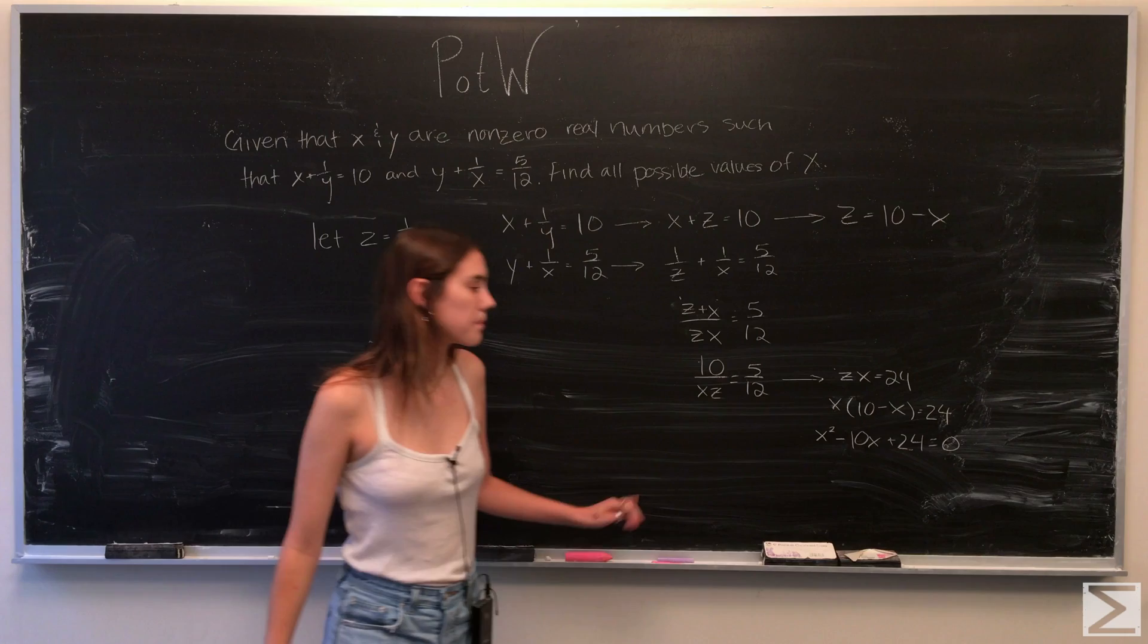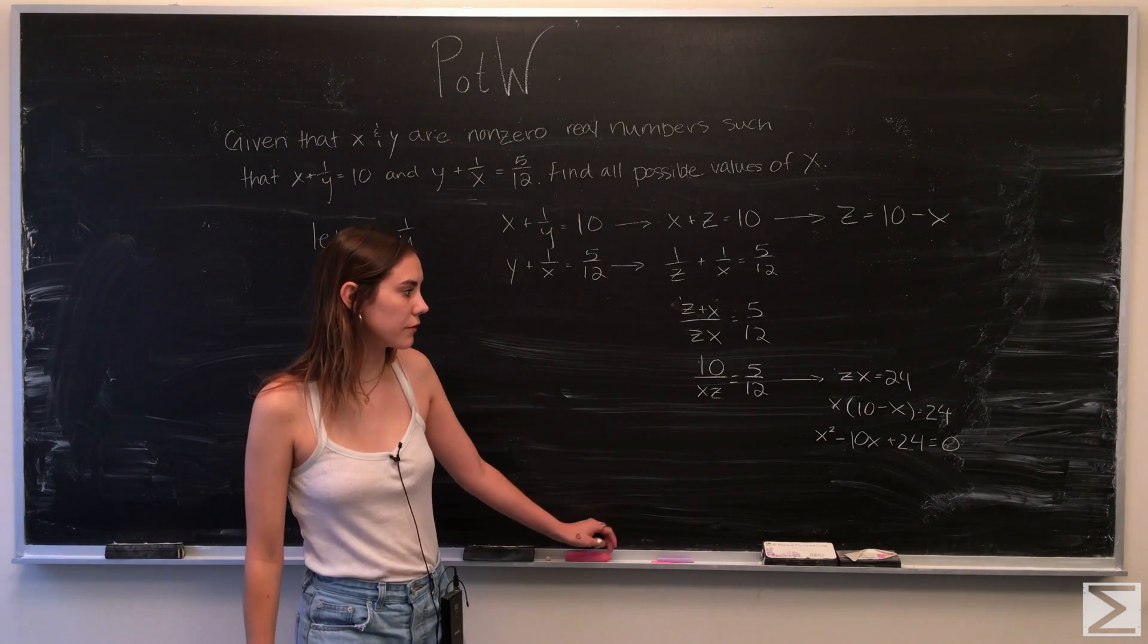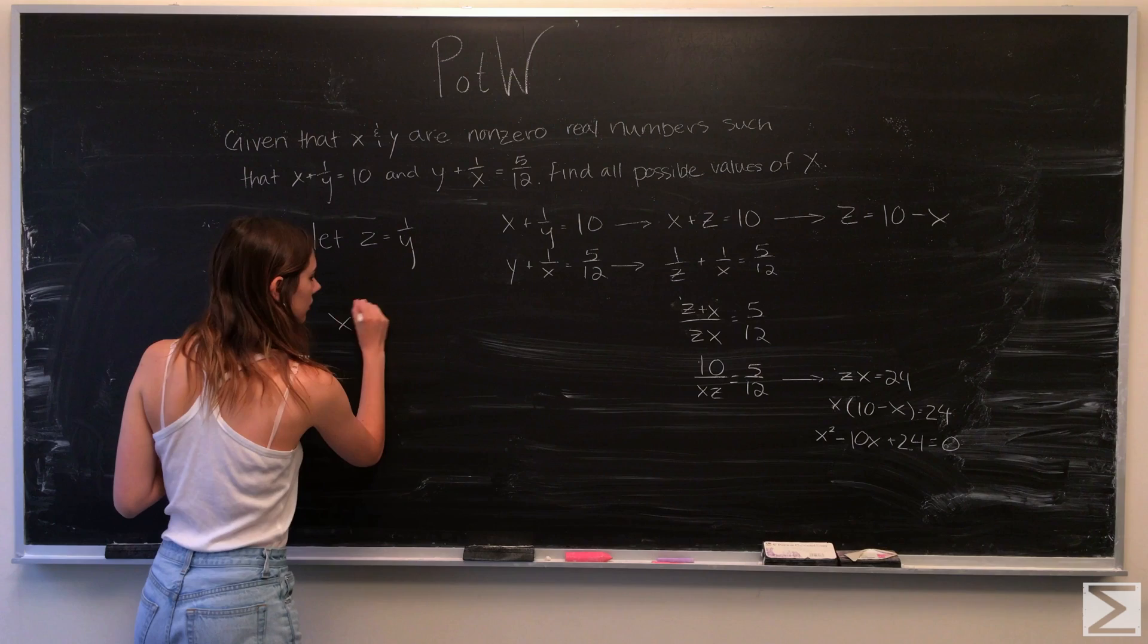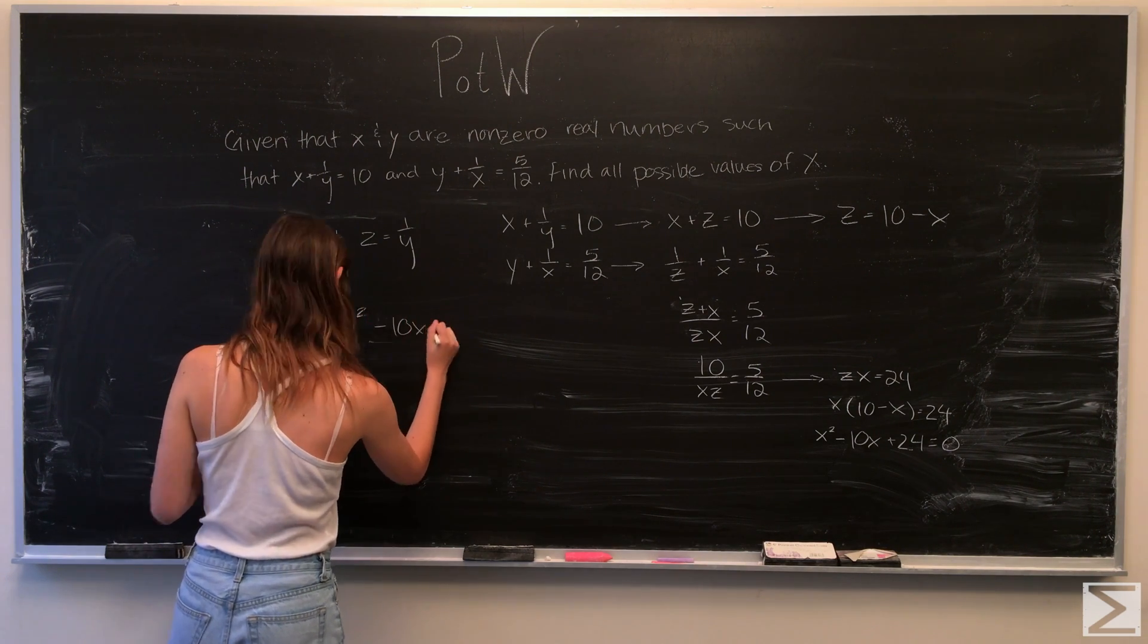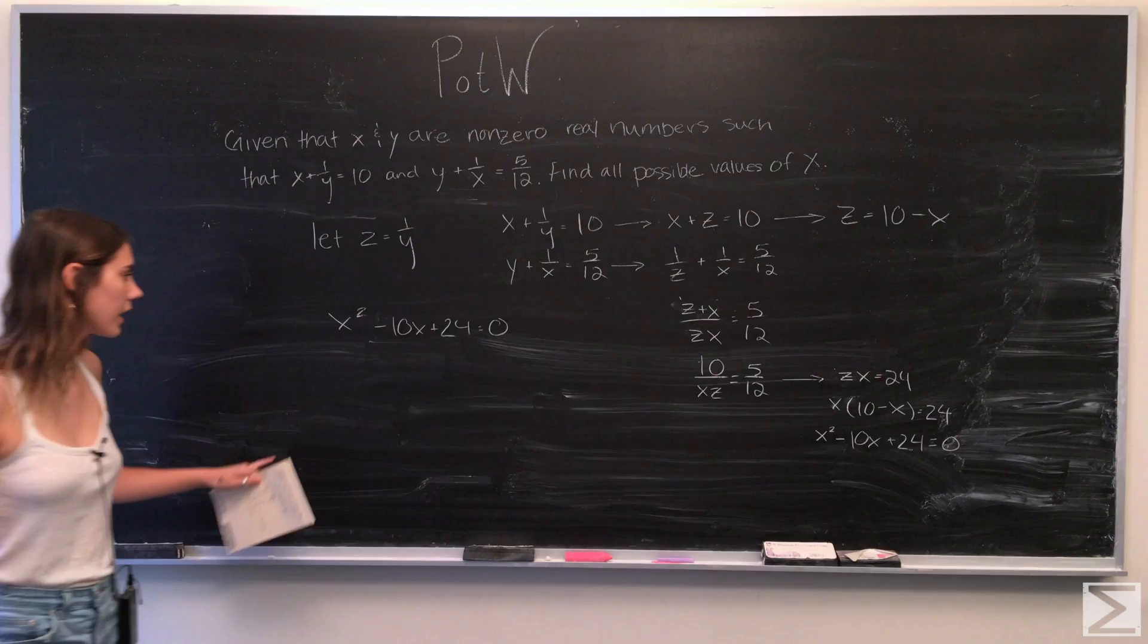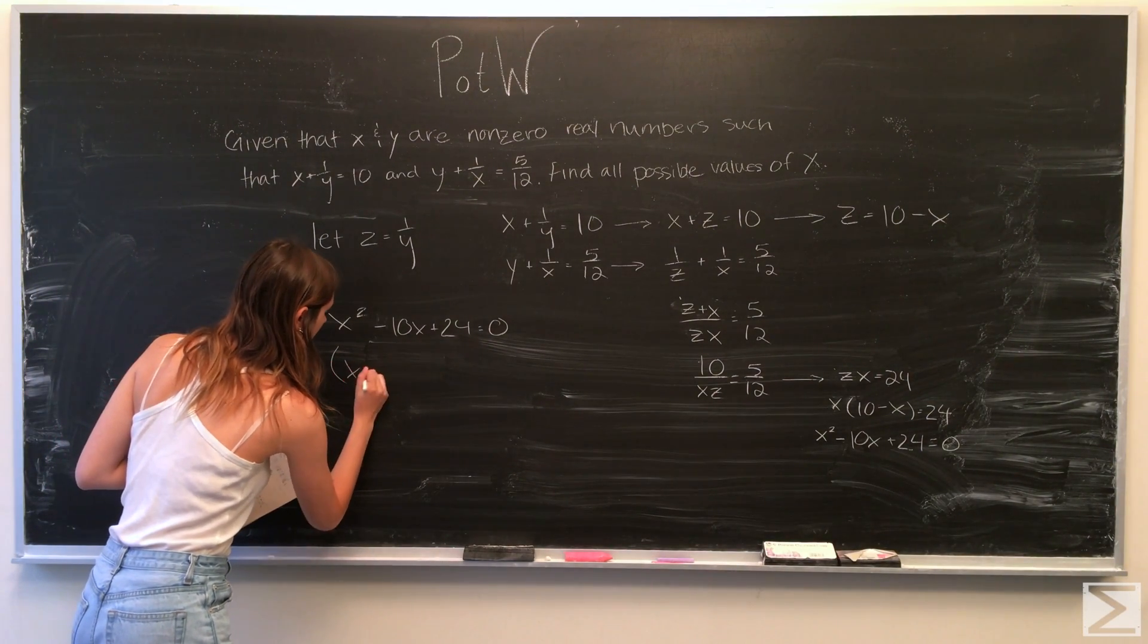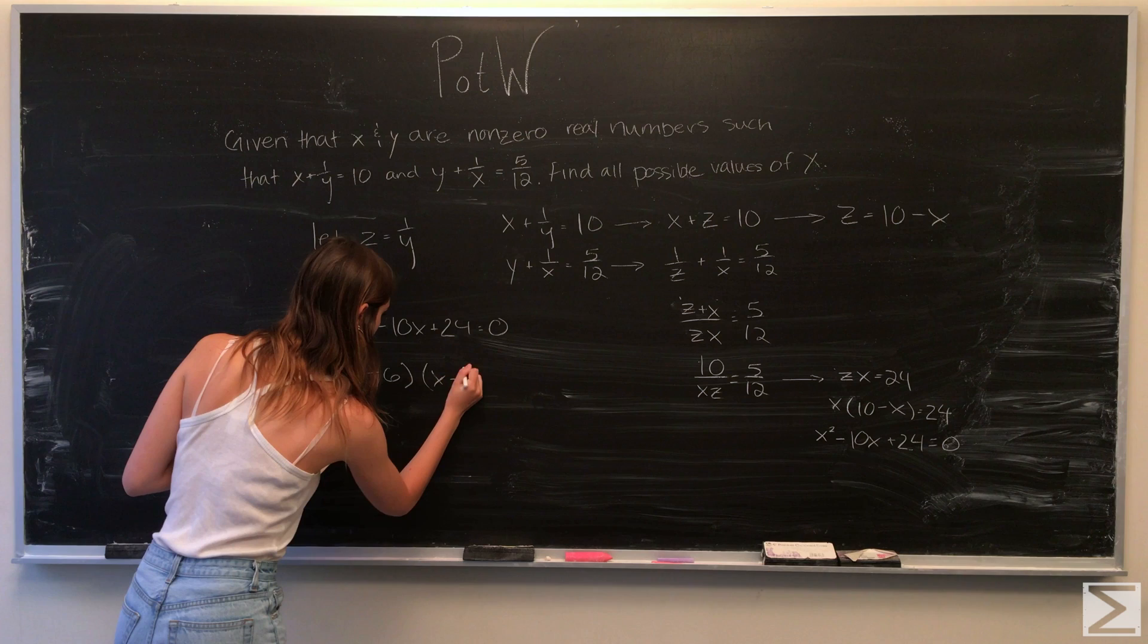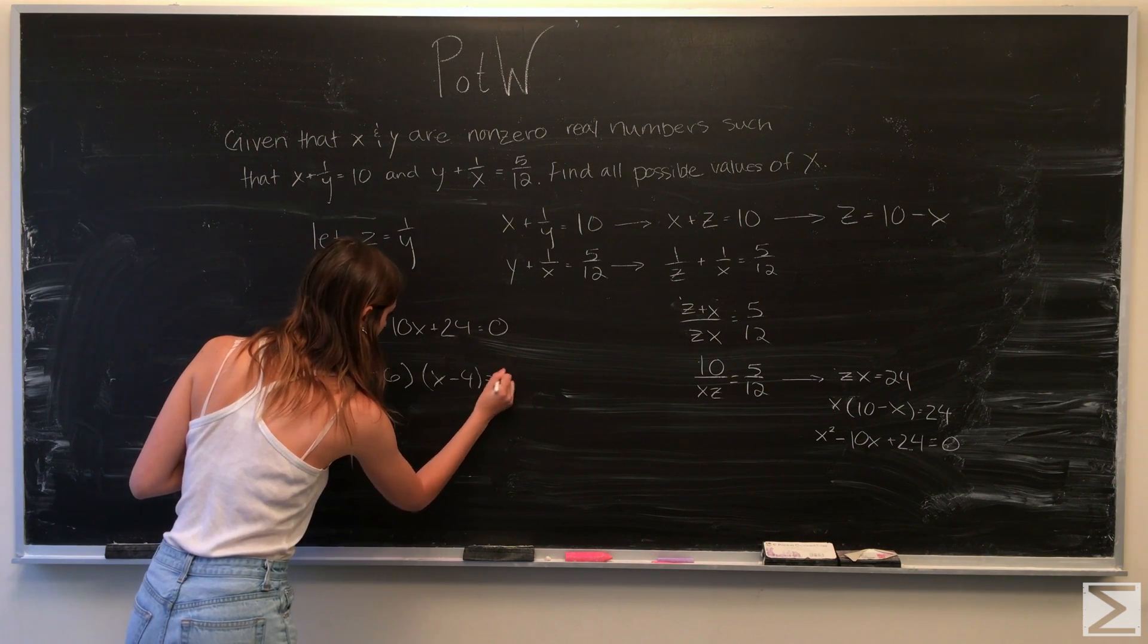So what we get is x squared minus 10x plus 24 is equal to 0, and factoring that, what we get is x minus 6 times x minus 4 is equal to 0.